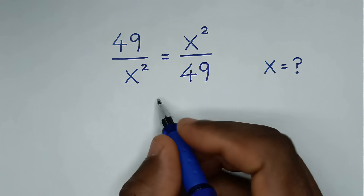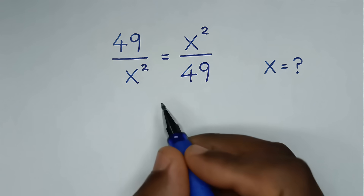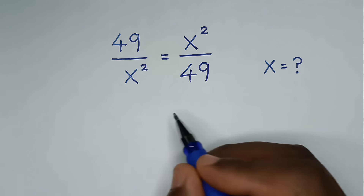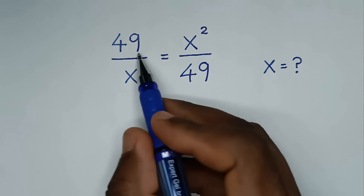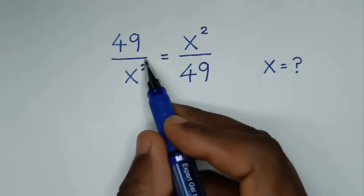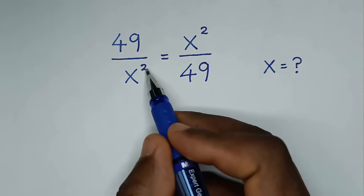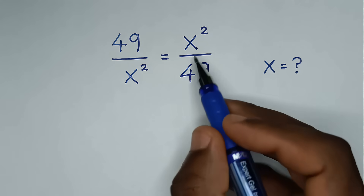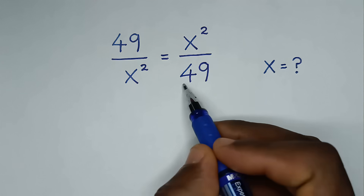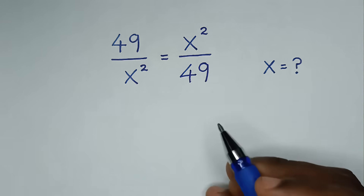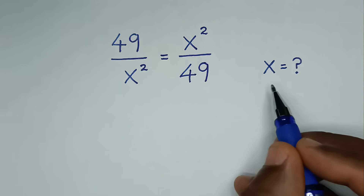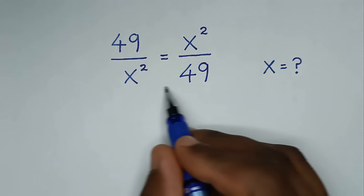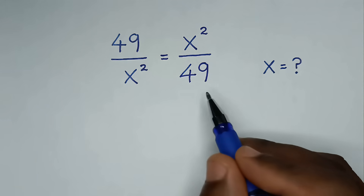Hello, you are welcome to solve this math problem, which is 49 over x squared is equal to x squared over 49. We need to find the values of x from this equation.